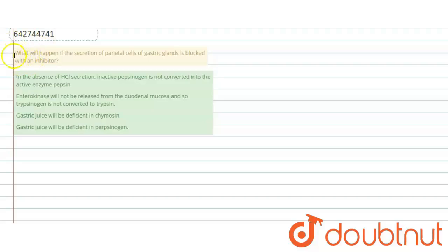This question asks what will happen if the secretion of parietal cells of gastric gland is blocked with an inhibitor. First, let me tell you that parietal cells are a type of cell which is present in the gastric gland.